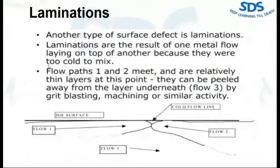Lamination: another type of surface defect is called the lamination. This condition is caused when one metal flow lays on top of another metal flow, and this happens because the metal was too cold to knit together when the flows meet.